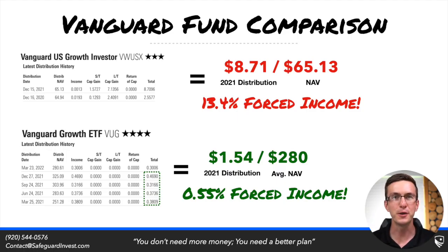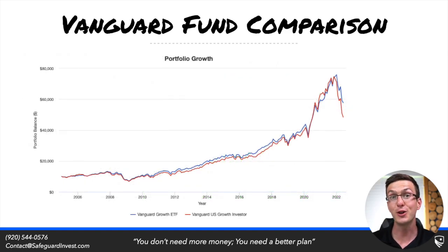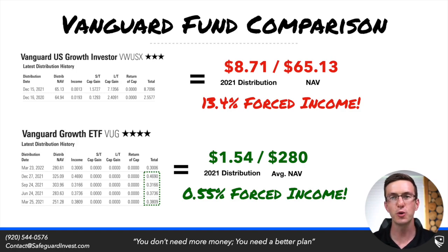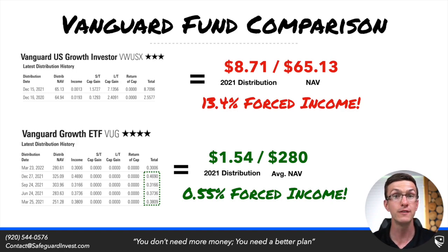Next, let's look at a Vanguard fund comparison. The Vanguard US Growth investor fund — which I'd classify as a closet index fund — is compared to the Vanguard Growth ETF. Their performance is quite similar and they hold many of the same investments, but the tax cost is vastly different. In 2021, the Vanguard US Growth investor mutual fund distributed 13.4% of forced income to investors, while the Vanguard Growth ETF distributed only 0.55% to investors as forced income.